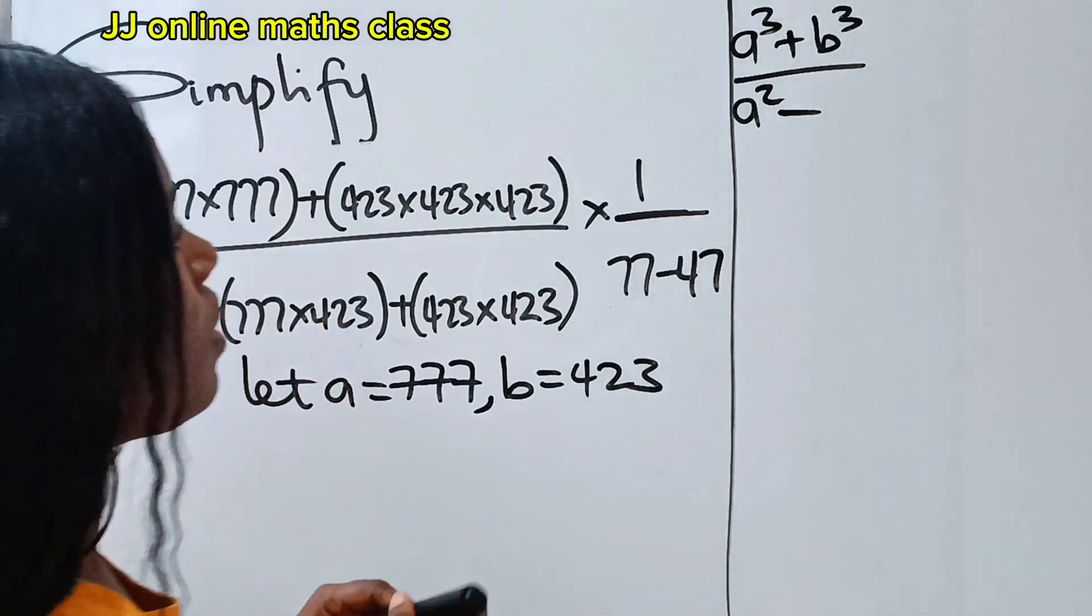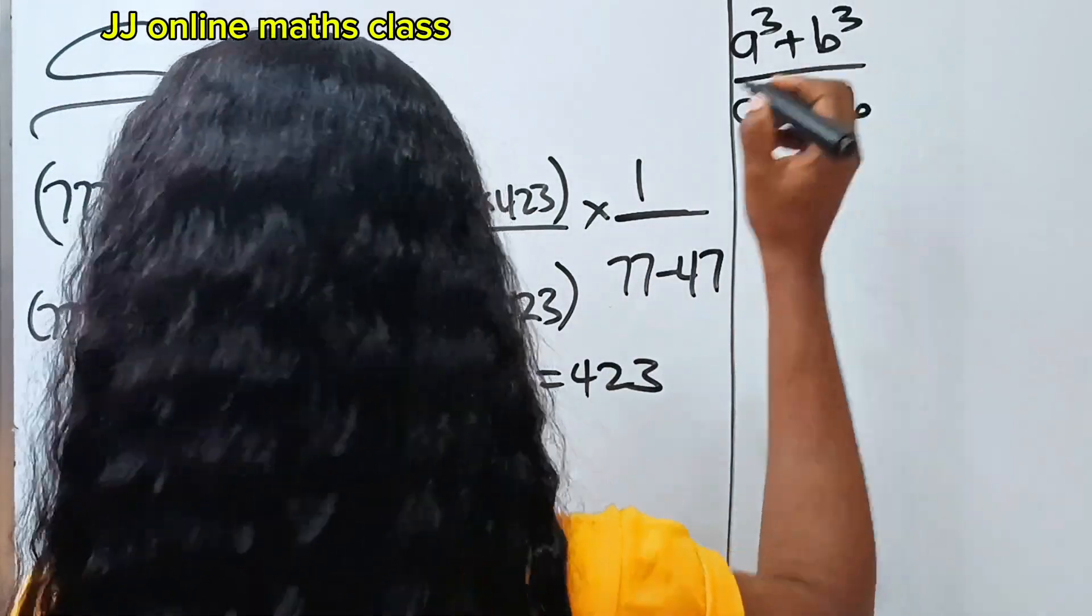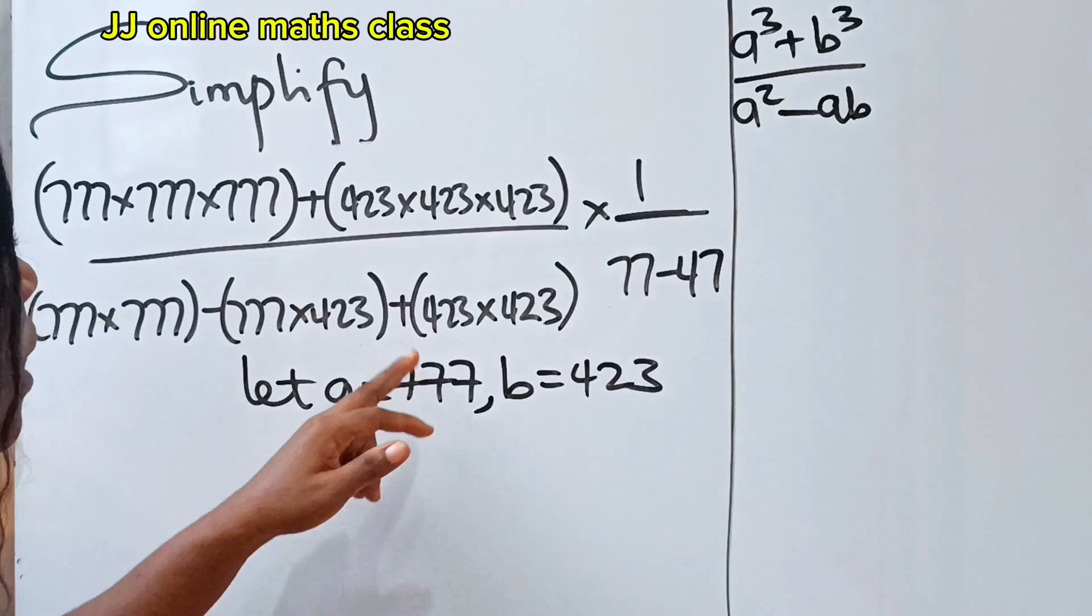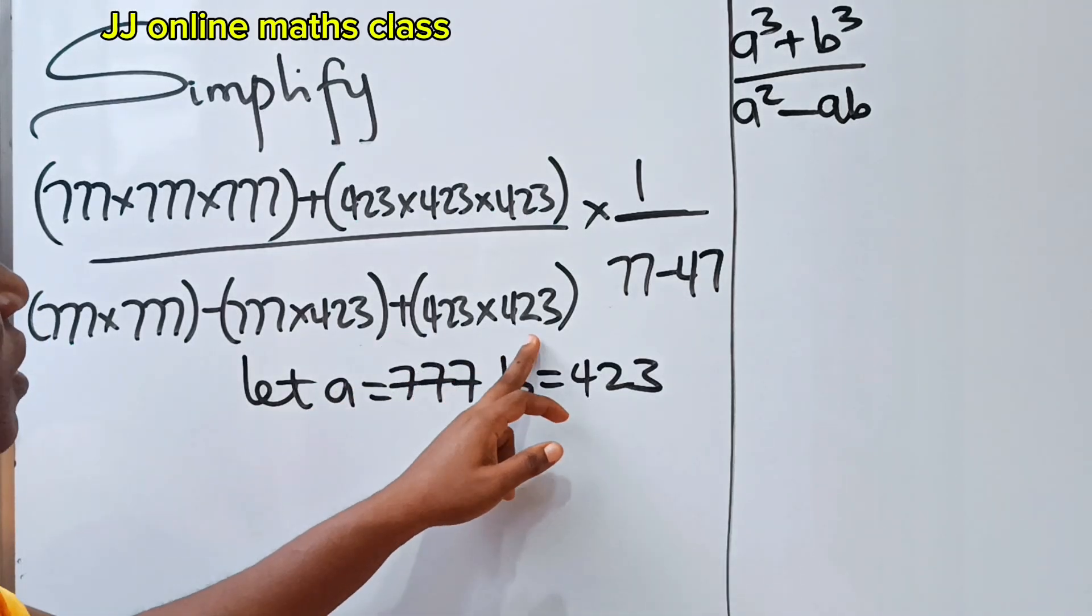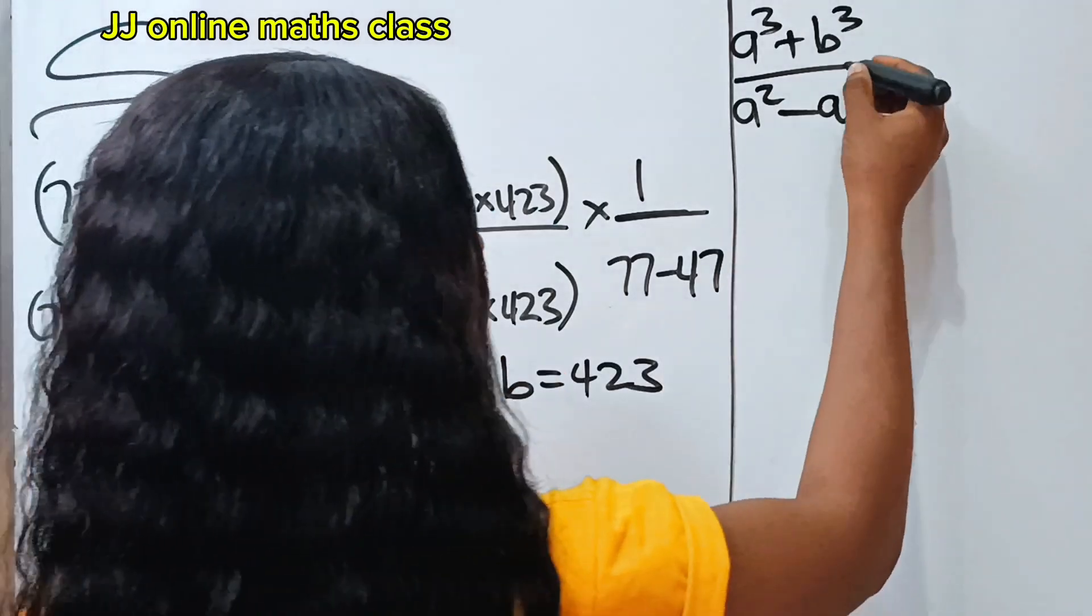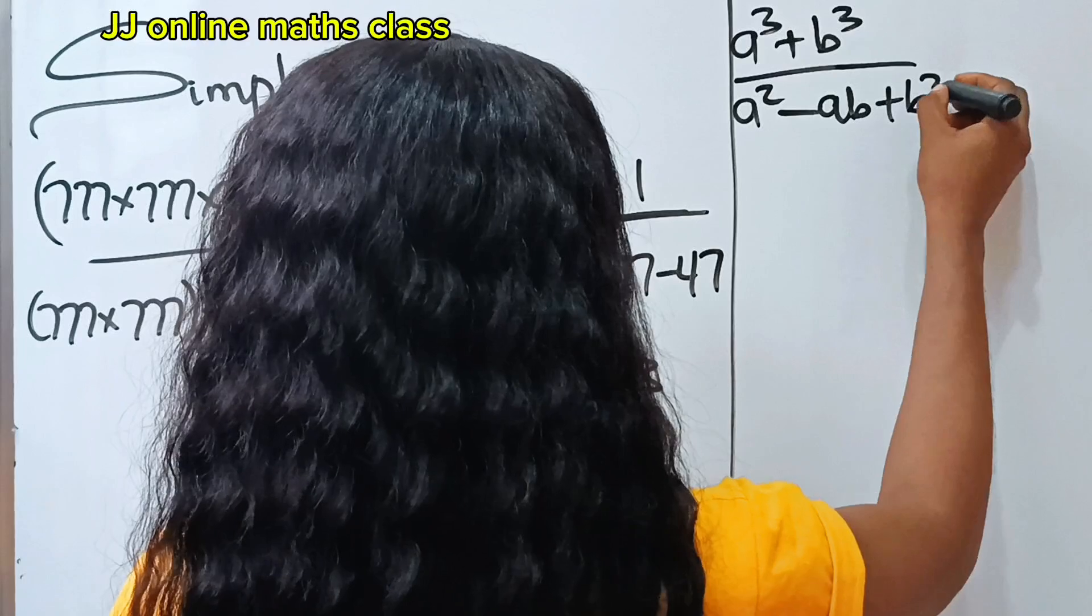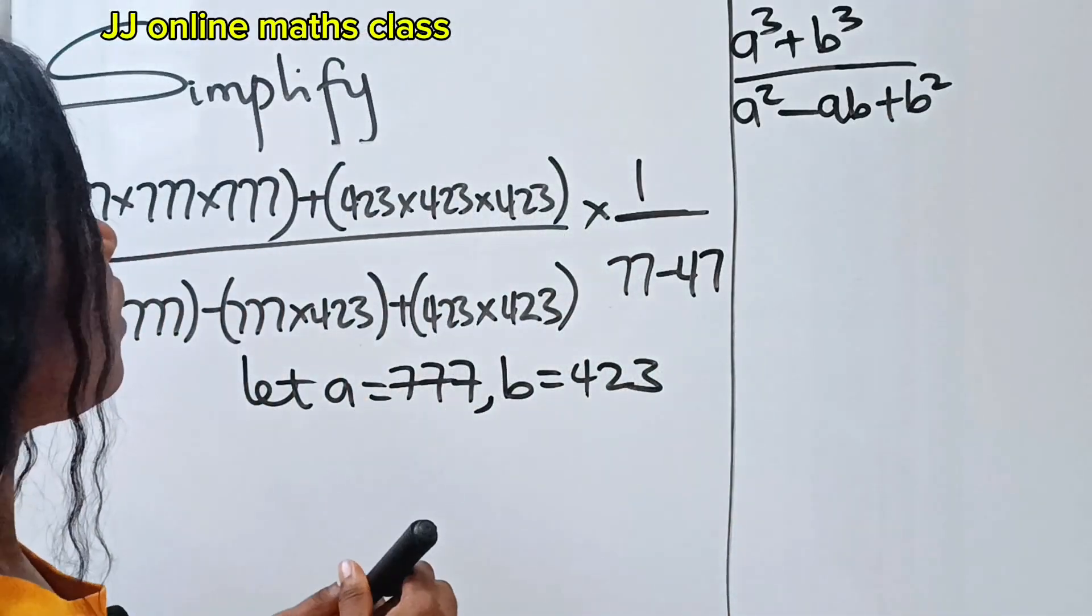a times b, right? So minus ab, then plus this times this should be b² plus b².